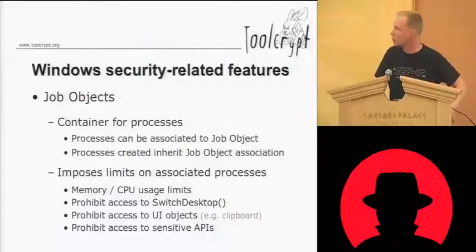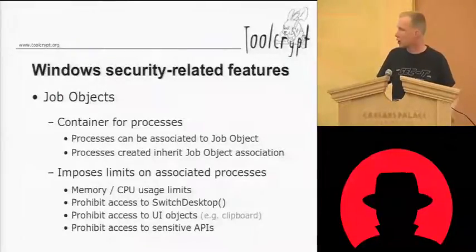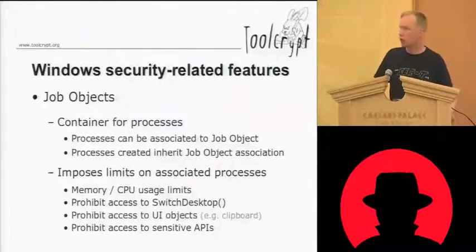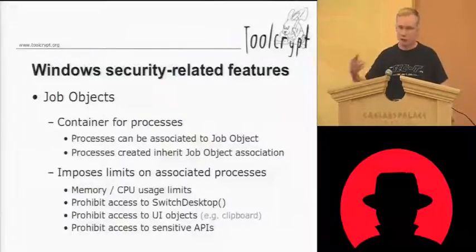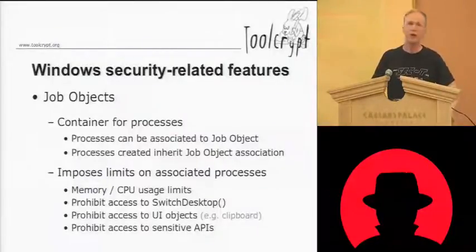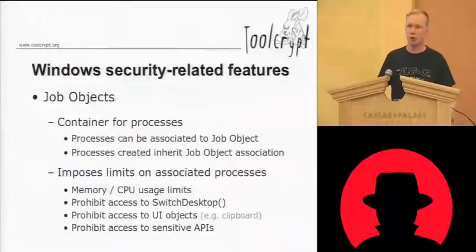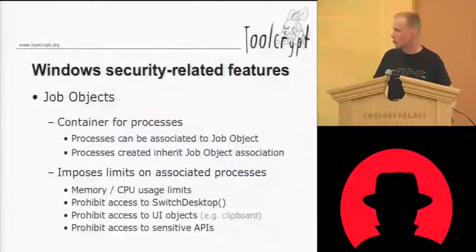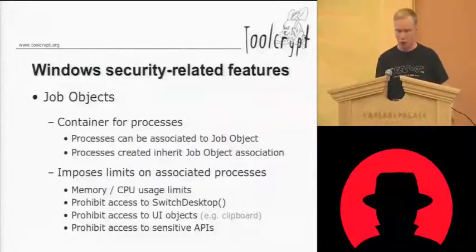Microsoft implemented a job object which you can create and assign processes to. The job object can set a number of different limits — on CPU usage, memory usage, and runtime of an application to prohibit hung or runaway processes. It can also prohibit access to certain GUI objects above the desktop level, such as the clipboard, and prohibit access to sensitive APIs that might be used to compromise other processes.